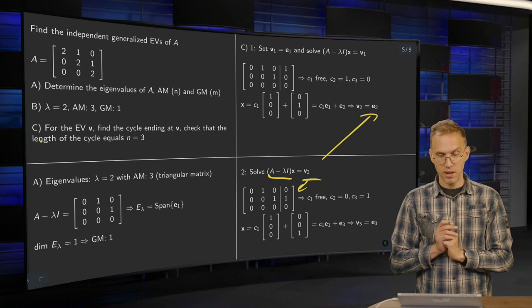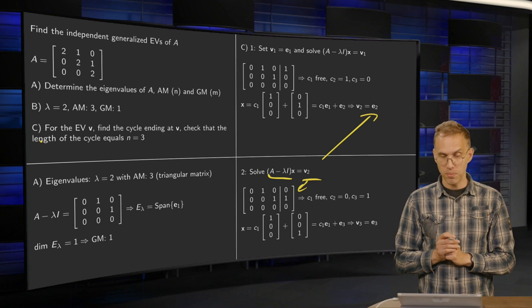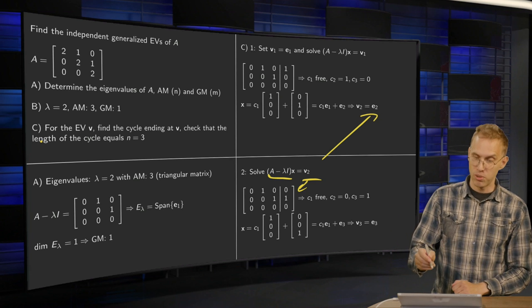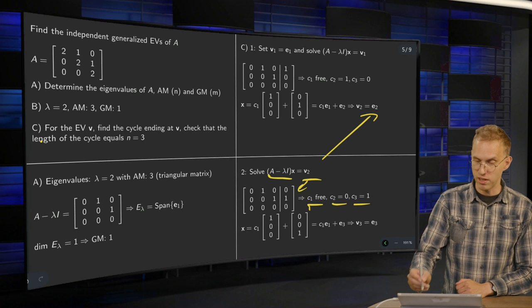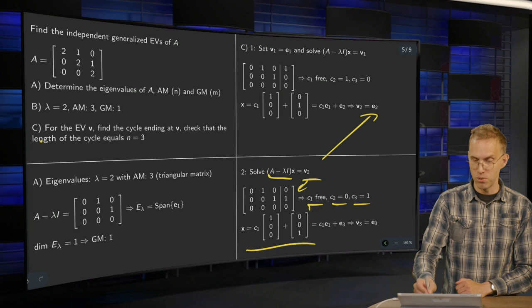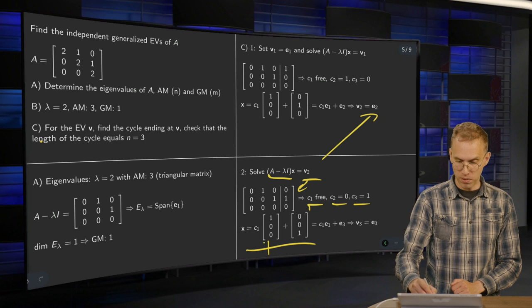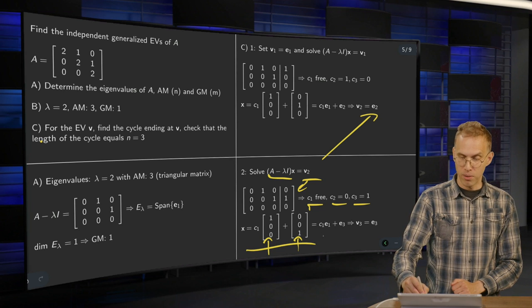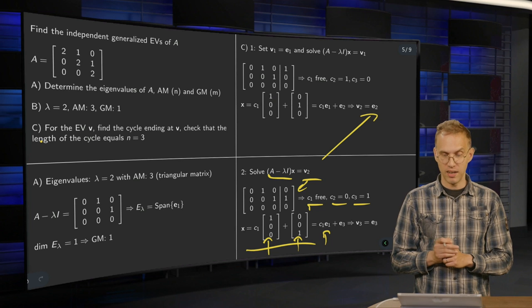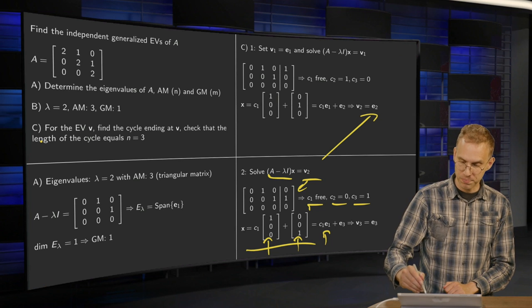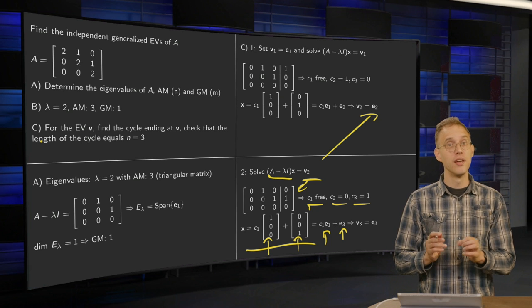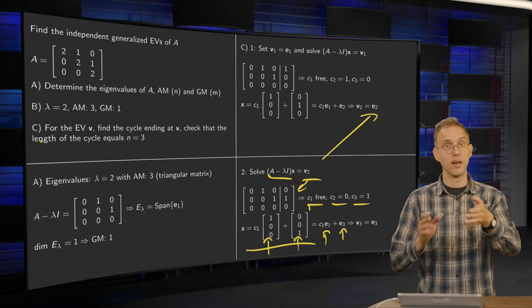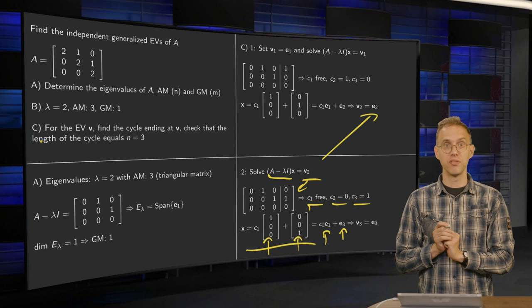We do the same. So we basically do the same trick. But now our solution is C1 again 3, of course. Now we have C2 equals 0, C3 equals 1. Write down the solution. The homogeneous part and the particular part. Homogeneous part the same again in the eigenspace. And our particular solution is E3. So our V3, we can pick it as our particular solution equals E3.